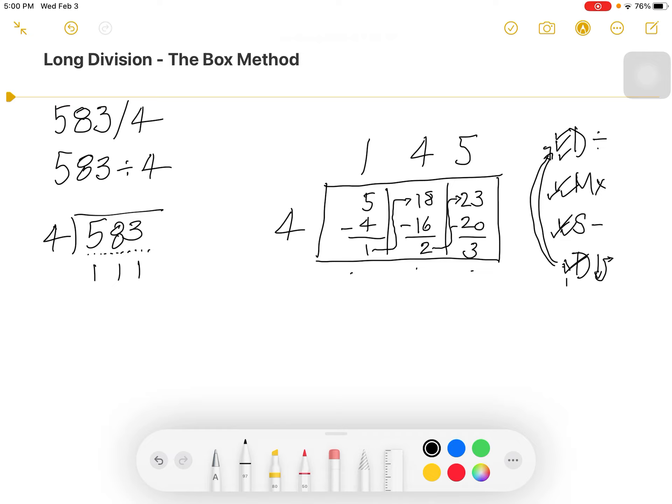And then finally, we cannot drag anymore because there are no boxes to be had. So we are done with our process. Our remainder, which we can see is less than our divisor, is 3. So the answer to our problem is 145 with a remainder of 3.